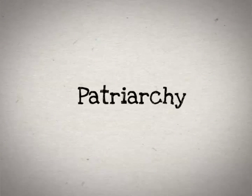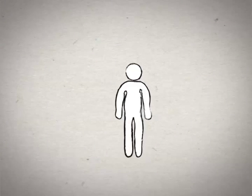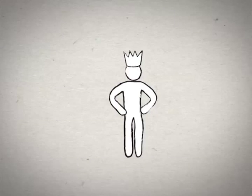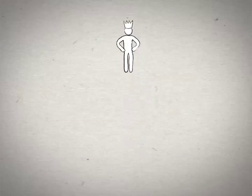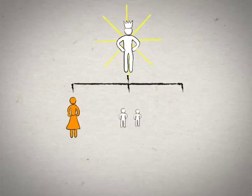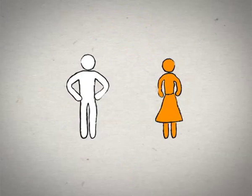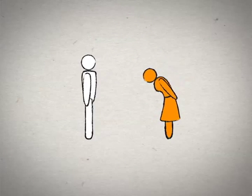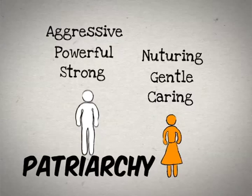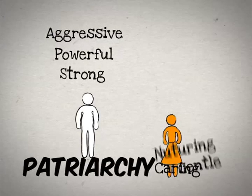Patriarchy is a social system in which the role of the male as the primary authority figure is central to social organization, and where fathers hold authority over women, children, and property. It implies the institution of male rule and privilege, and is dependent on female subordination. In the patriarchy system, male traits are more valued than female traits.